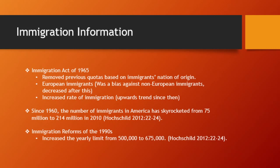In 1990, another reform allowed the number of immigrants to increase from 500,000 a year to 675,000. Legislation has since been put into place to restrict and punish illegal immigration. Since 1960, the number of immigrants in America has skyrocketed from 75 million to 214 million in 2010. Immigration has been 75% of our nation's population growth since 2000, with the other 25% being births.